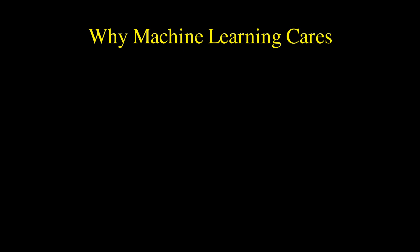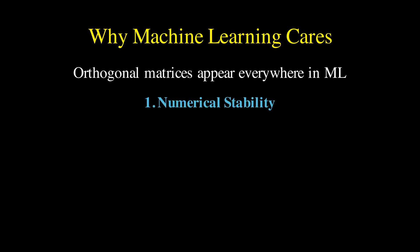So, let's talk about why orthogonal matrices appear everywhere in machine learning. First, numerical stability. When you're implementing algorithms that require matrix inversion, and there are many such algorithms in machine learning, orthogonal matrices are your friend.